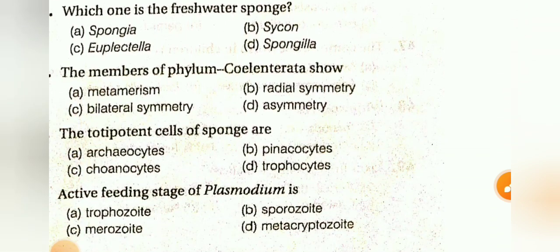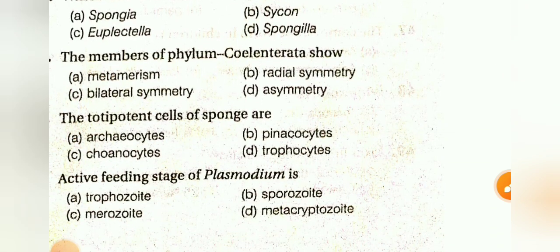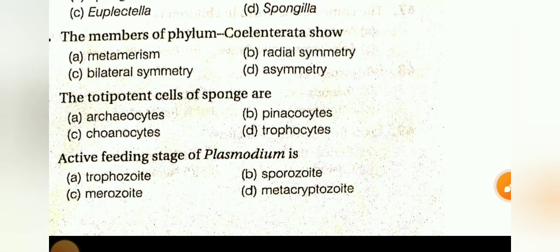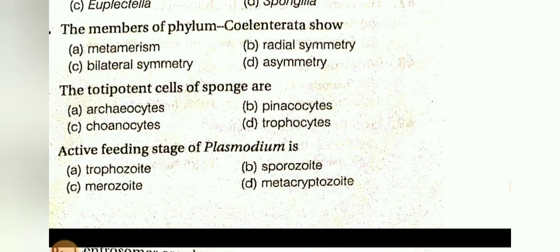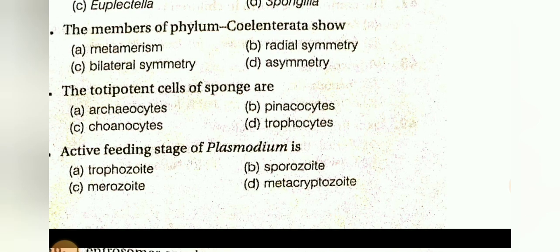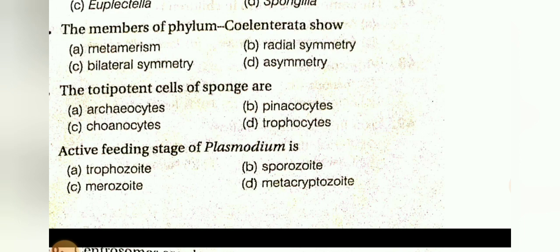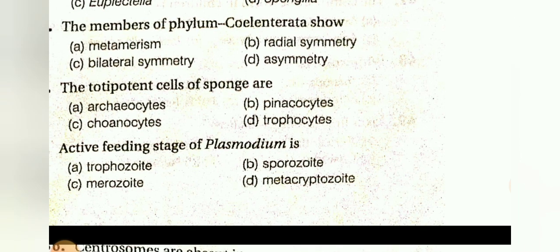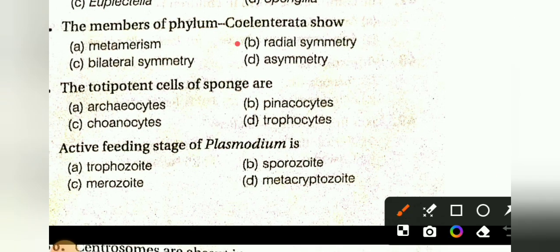The members of phylum Coelenterata show: metamerism, radial symmetry, bilateral symmetry, or asymmetry. The answer is B, radial symmetry.